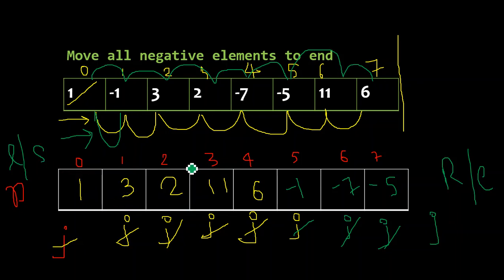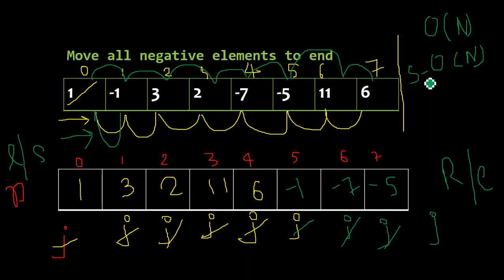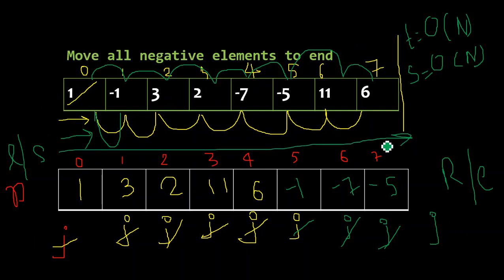This algorithm takes O(n) time complexity and O(n) space complexity because we are using a new array of size n. We are traversing the array one time for positives and one time for negatives. There is also another approach that takes O(n) time but O(1) space complexity - we won't use another array but will do swapping in place. I will make a video for that later; for now let's stick to this algorithm.